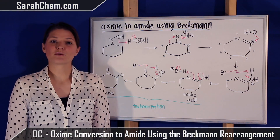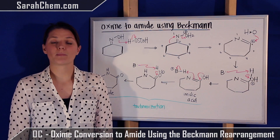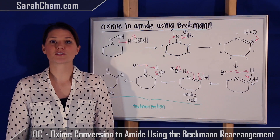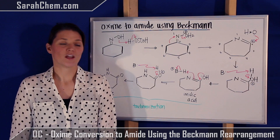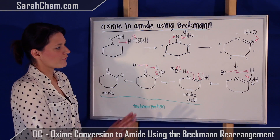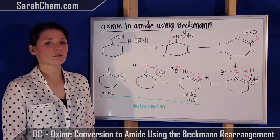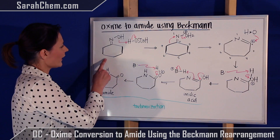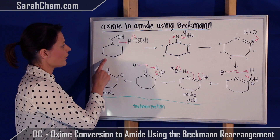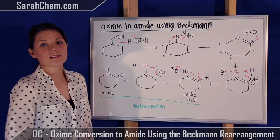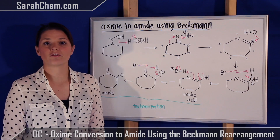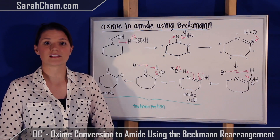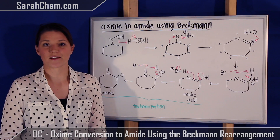Hi everyone! This is a video tutorial on the Beckmann rearrangement mechanism for converting an oxime to an amide. Looking at the board, we have the mechanism laid out and we're going to talk about it step by step. Here we have our oxime that we're starting out with — this oxime was derived from a ketone. If you're unsure how that reaction takes place, there is a video that discusses it.